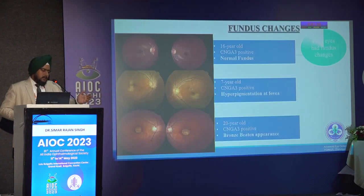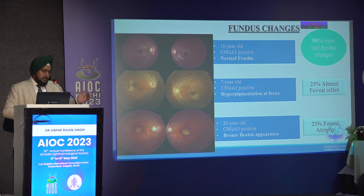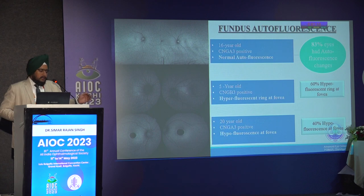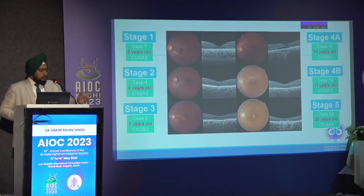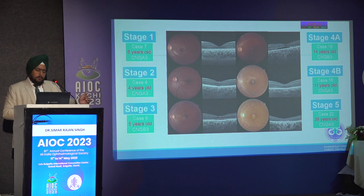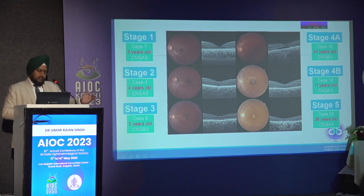Variable fundus changes range from normal-looking fundus to hyperpigmentation at the posterior pole and frank atrophy. 50% of eyes had fundus changes; autofluorescence detected changes in 83% of eyes, ranging from hyperautofluorescence to a ring of hyperautofluorescence or complete hypoautofluorescence. OCT shows a characteristic stage-like progression: stage 1 — flattening of the ellipsoid zone; stage 2 — a gap in outer cone photoreceptors; stage 3 — optically empty space; stage 4A — RPE atrophy and hypertransmission; stage 4B — gap flattened; stage 5 — complete atrophy. This was progressive with increasing age, but visual acuity was similar across all stages.